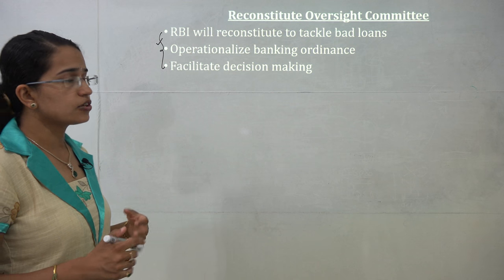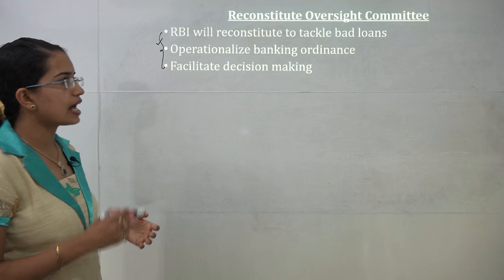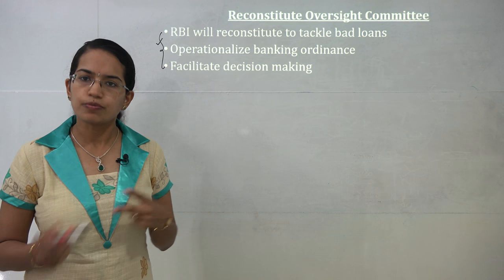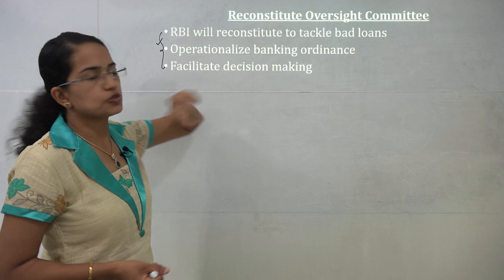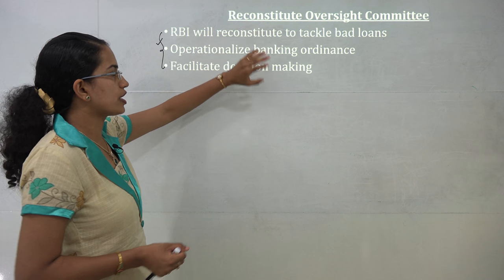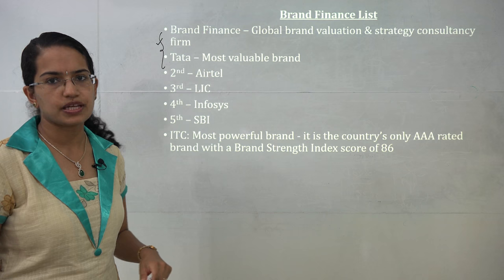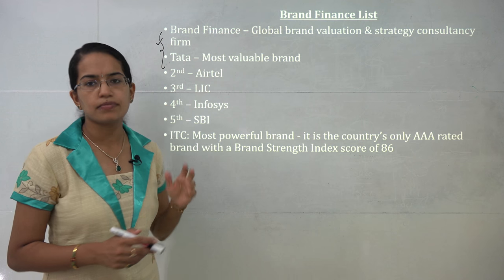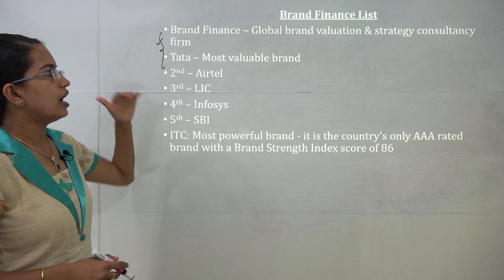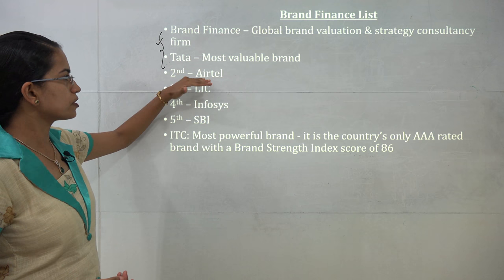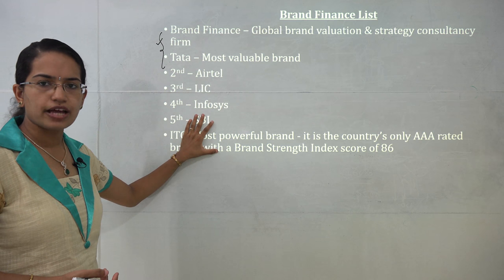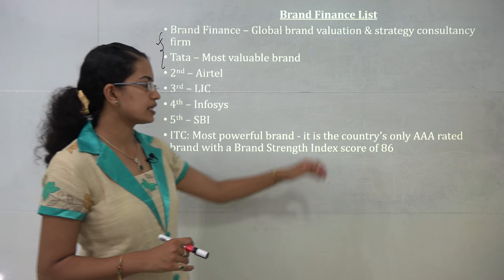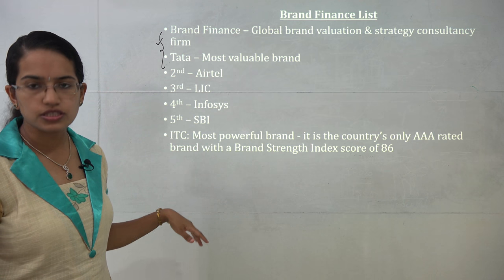Reconstitution of the oversight committee has taken place. This committee deals with tackling bad loans — when interest or principal amount is not repaid. It helps operationalize the banking ordinance and facilitates decision-making in banking. The brand finance list: brand finance is a global brand valuation and strategic consultation firm. In India, Tata is the most valuable brand, followed by Airtel, LIC, Infosys, and SBI — the top 5 rated brands in India. ITC is one of the most powerful brands and is the only brand rated AAA with a brand strength score of 86.